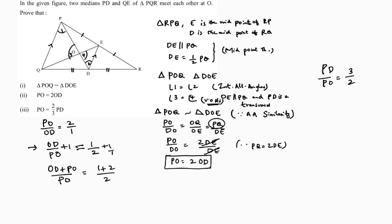You can do invertendo or cross multiply. Since we want PO at the top, PO by PD is 2 by 3. So PO equals 2 by 3 times PD. This is the third proof.